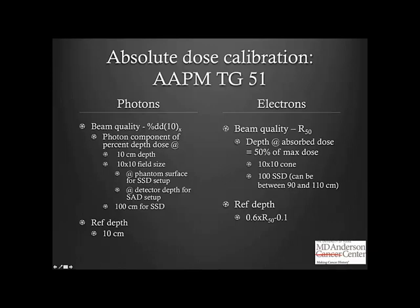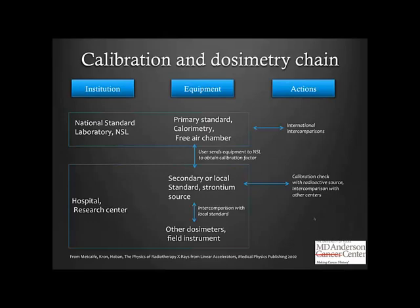There is a calibration and dosimetry chain involved in absolute dose calibration. The physicist uses an ion chamber calibrated to a secondary or local standard, sometimes including a source for brachytherapy. This local standard is in turn traceable to primary standards obtained through calorimetry or free air chamber measurements at a national standards laboratory such as NIST, allowing international intercomparison across countries. Ultimately, all calibrations are traceable back to NIST.